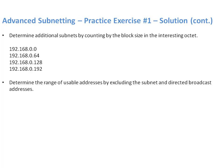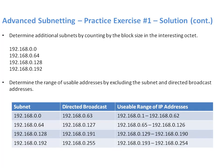Continuing to count by the block size of 64 in the fourth octet, we get 192.168.0.128 and 192.168.0.192. Now we determine the usable range of addresses. The network addresses listed on screen are the subnets — we cannot use those, as they're the address of the wire. To find the directed broadcast, you don't need to do binary math: just take one away from the value of the next subnet. For example, the next subnet after 192.168.0.0 is 192.168.0.64, so the directed broadcast is 192.168.0.63. Everything in between the network address and directed broadcast is your usable range.